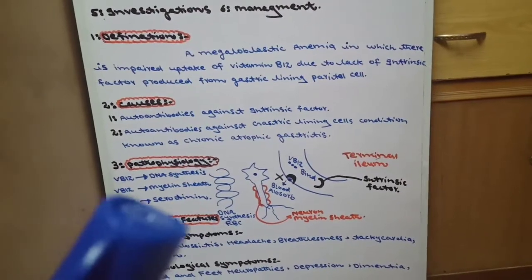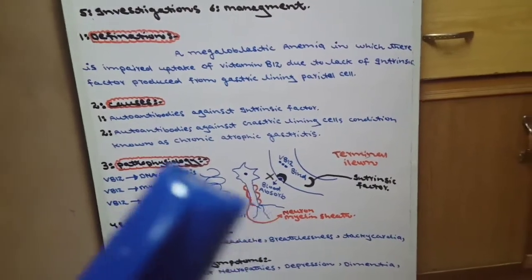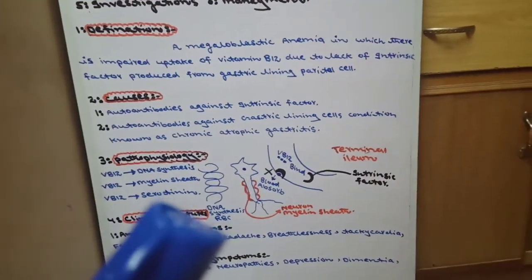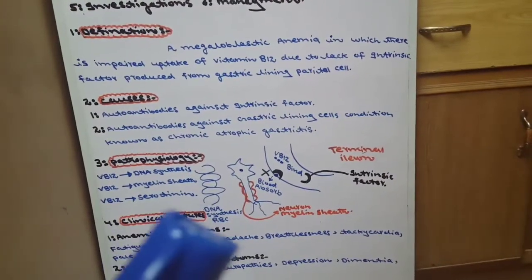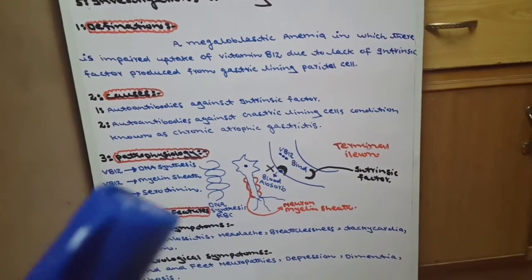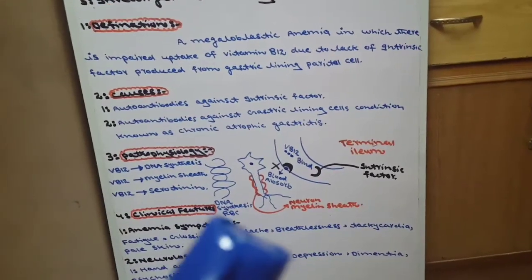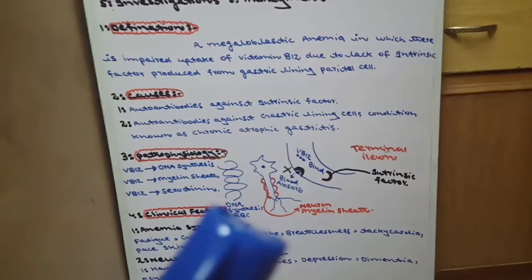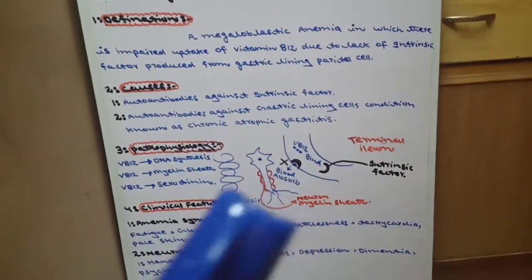Another role of vitamin B12 is myelin sheath formation and serotonin production. When vitamin B12 is deficient, there will be no myelin sheath, serotonin hormone levels decrease, and there will be depression, dementia, and psychosis.